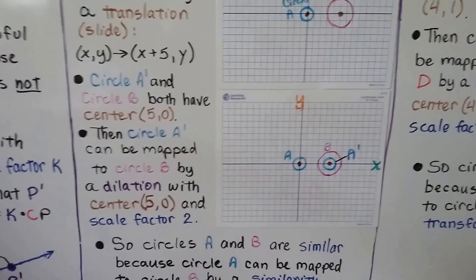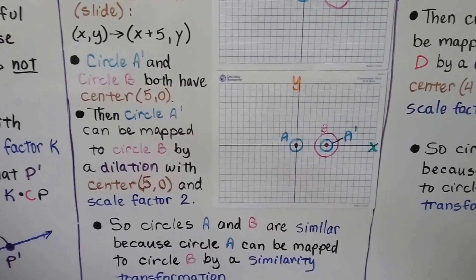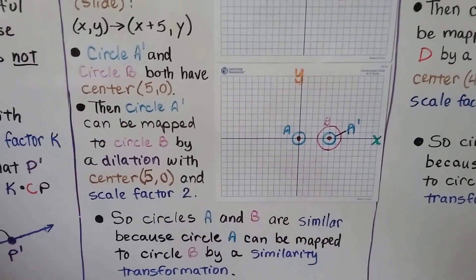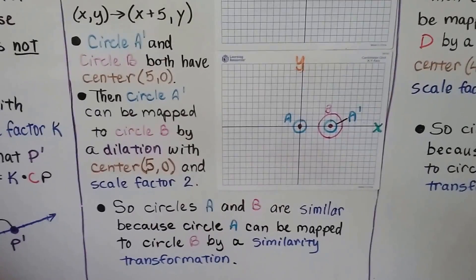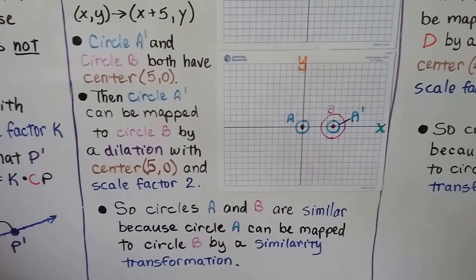Then circle a prime can be mapped to circle b by a dilation with that same center, five zero, and a scale factor two. So circles a and b are similar because circle a can be mapped to circle b by a similarity transformation.